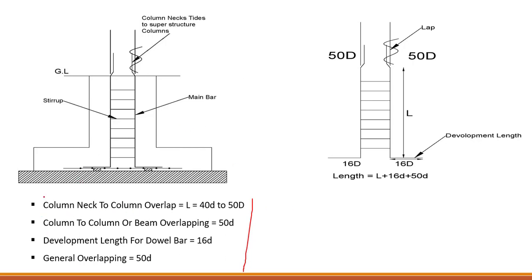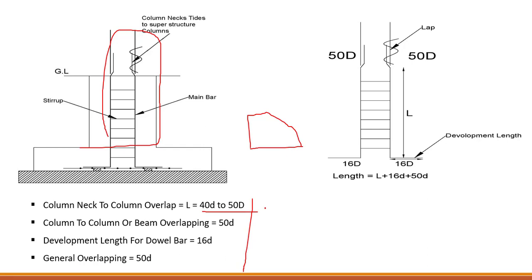For column-next — the column connected to the superstructure column — the overlap is 40d to 50d, meaning 40 times the bar diameter to 50 times the bar diameter. So if we have a footing and a column running from that footing up to the superstructure column, the overlap length at that connection is 40d to 50d.